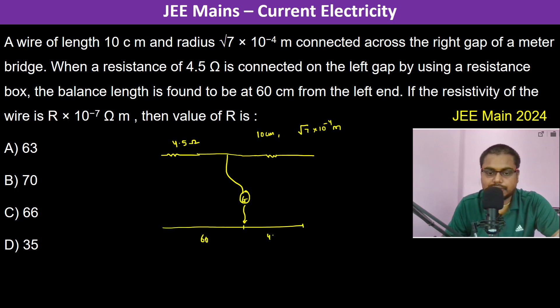If the resistivity of the wire is R × 10^-7 ohm meter, the value of R is... So Wheatstone principle works on the principle of...